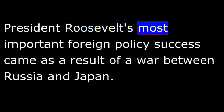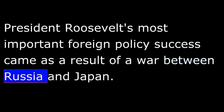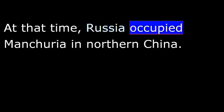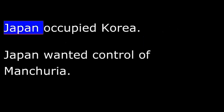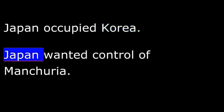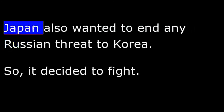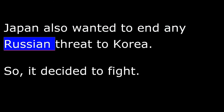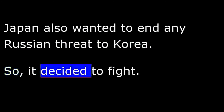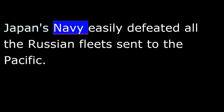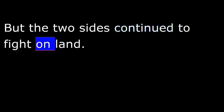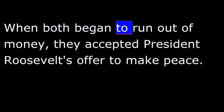President Roosevelt's most important foreign policy success came as a result of a war between Russia and Japan. At that time, Russia occupied Manchuria in northern China, and Japan occupied Korea. Japan wanted control of Manchuria — it needed that area's coal and iron ore — and also wanted to end any Russian threat to Korea. So it decided to fight. Japan's navy easily defeated all the Russian fleets sent to the Pacific, but the two sides continued to fight on land.